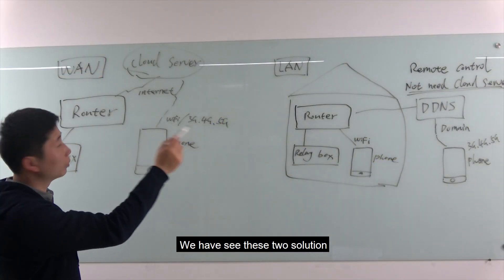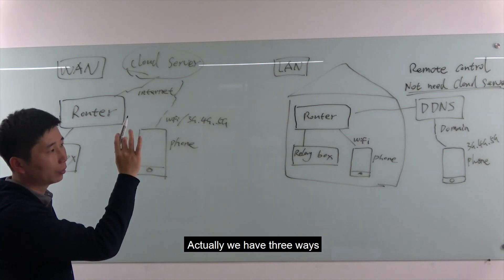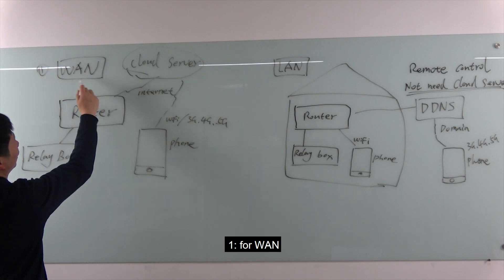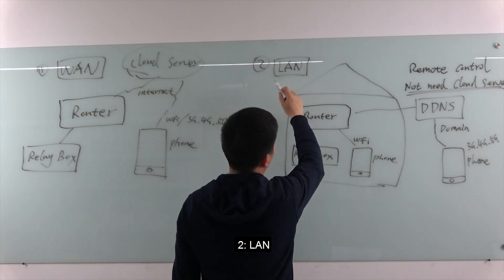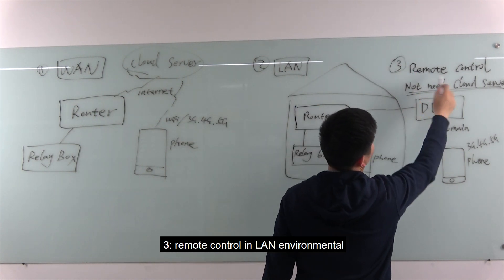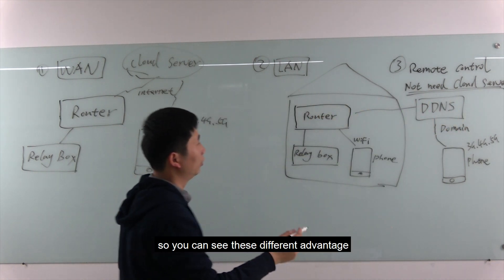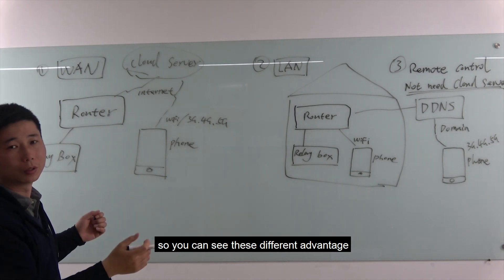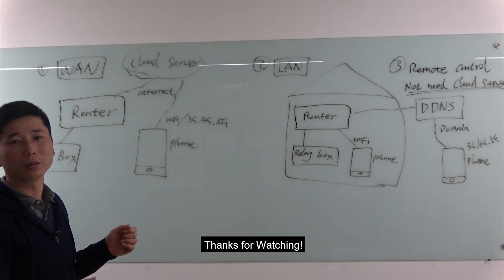We have now seen these two solutions. Actually there are three ways in total: one is WAN, the second is LAN, and the third is remote control within a LAN environment using DDNS. You can see these different advantages and choose which solution is most suitable for you. Thanks for watching.